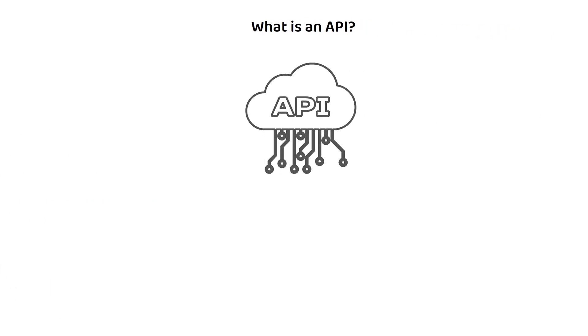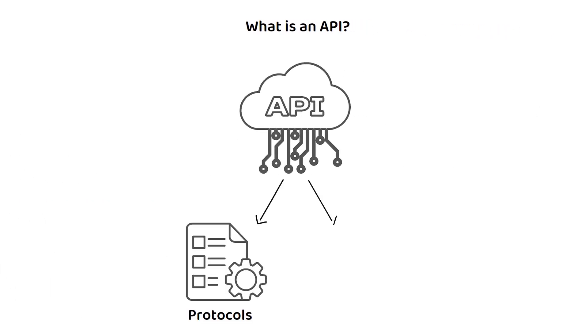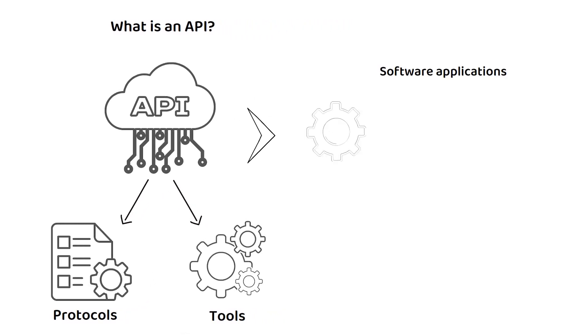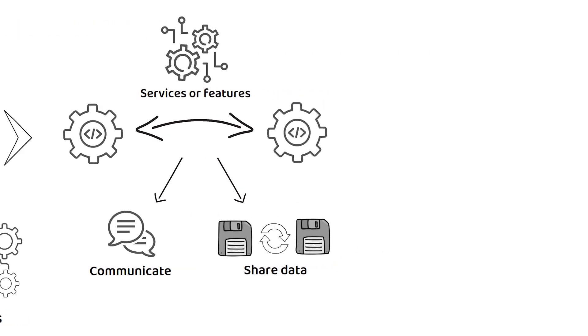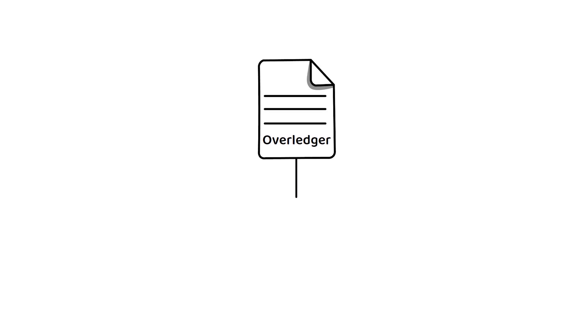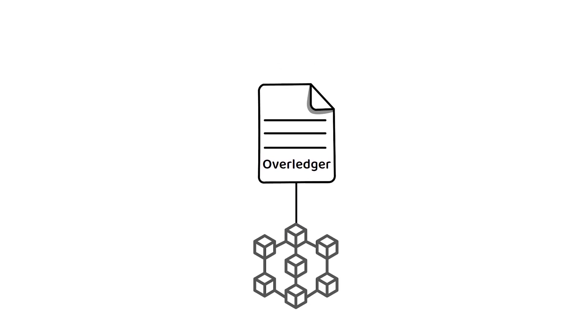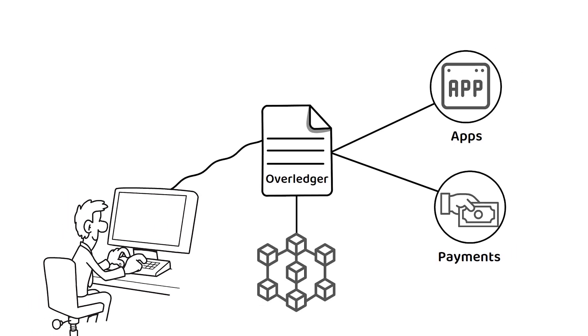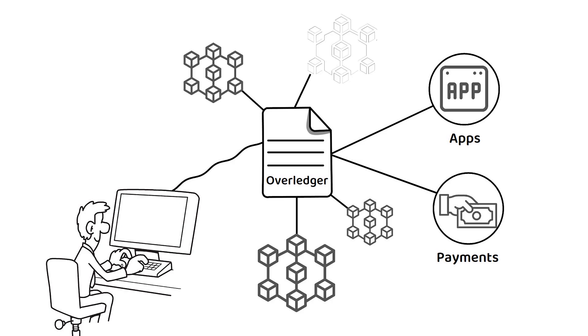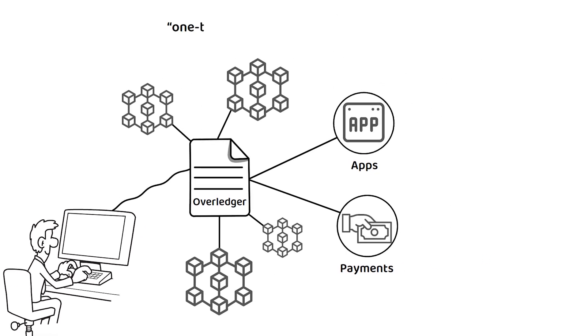To clarify, an API is a set of protocols and tools that allows different software applications to communicate and share data, facilitating the integration of functionalities and enabling one program to access and use the services or features of another. The idea behind the Over Ledger is to simplify the complexity of blockchains by allowing for a single sign-on experience for apps and payments across multiple blockchains, which will help to lead towards a one blockchain model for consumers, developers and institutions.